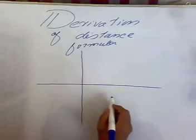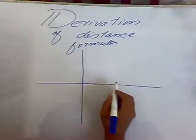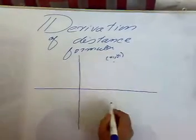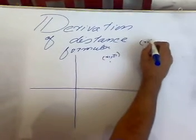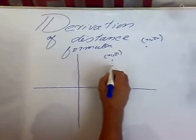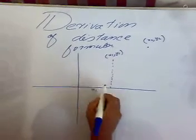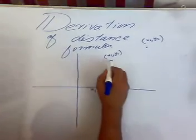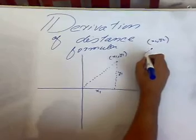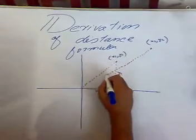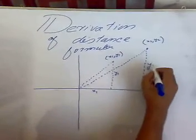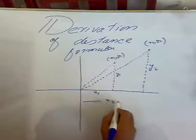Today we're going to learn how to derive the distance formula between two points. Suppose we have one point x1, y1 and another point x2, y2. If we draw the abscissa and ordinate of this point, this is x1 and this is y1 — that is its position vector. Similarly, for the second point, this will be its ordinate and this will be its abscissa.